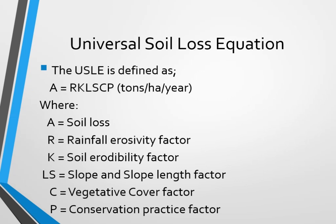Therefore, the most widely used method here is the Universal Soil Loss Equation. For the time being, this is the revised version — the Revised Universal Soil Loss Equation (RUSLE). This equation is defined as: A equals R times K times LS times C times P, in tons per hectare per year. Here, A is the soil erosion from one hectare of land in a year. R is the rainfall erosivity factor — that is, the power of the rainfall that detaches soil particles.